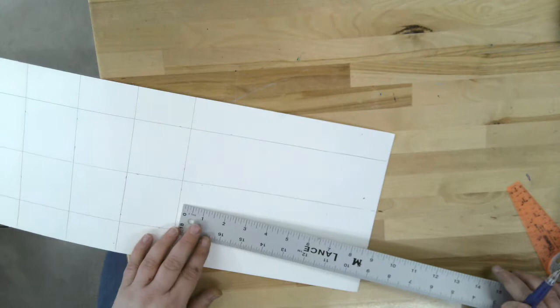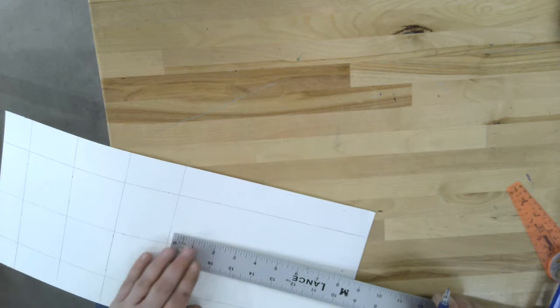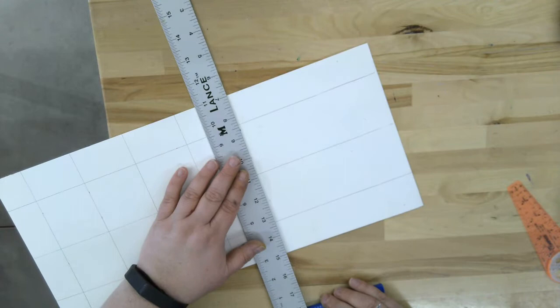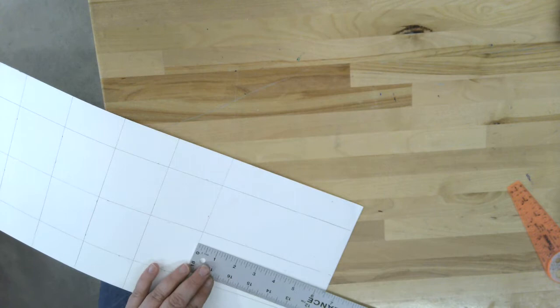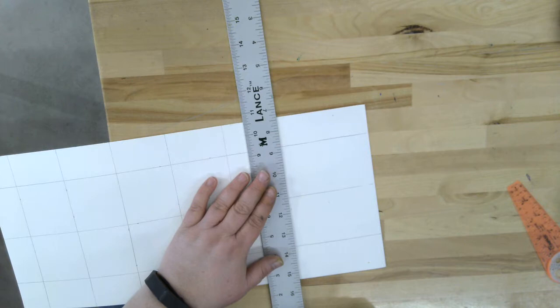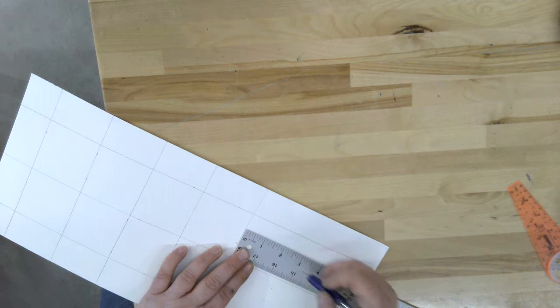And then from the middle, I'm going to measure off two and a half inches again. Line those two spots up. And then two and a half inches. I needed to do another one, so I have something to measure it with. Two and a half.